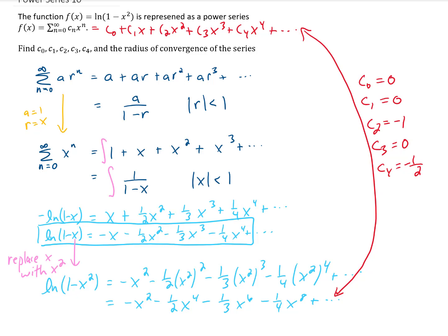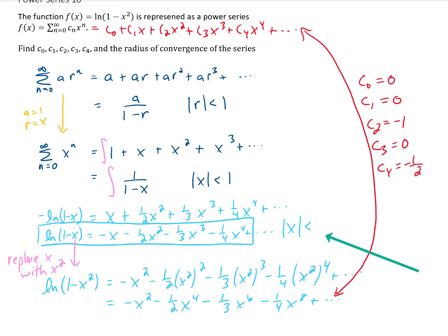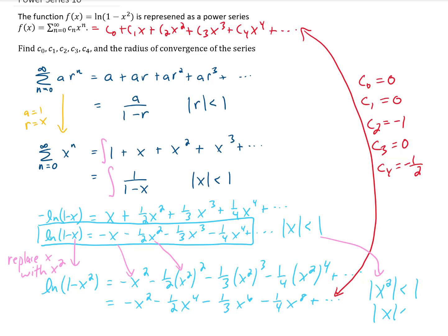The second part of the question can be answered by looking at the interval of convergence of the original geometric series. For convergence we required the absolute value of r to be less than 1. When we replaced r with x, we required the absolute value of x to be less than 1, and after our integration trick we still needed that requirement. When we replaced all x's with x squared, our requirement for convergence becomes that the absolute value of x squared is less than 1, which is really the same as requiring the absolute value of x to be less than 1.